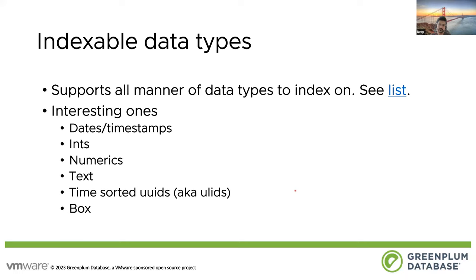What are the indexable data types? Things that make sense right away are dates and timestamps, integers, numerics, text, box (which is an interesting one), and time-sorted UUIDs. If you have UUIDs generated with respect to a timestamp so they have natural order, that's a good idea to put a BRIN index on them. To get a complete list, you can click on the documentation link.